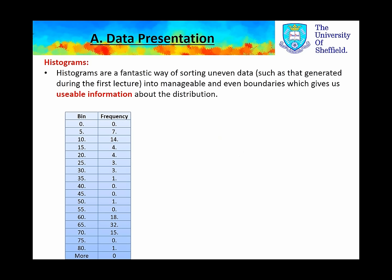In Lecture 3 we learnt that histograms are a fantastic way of sorting uneven data sets, such as that generated during the first lecture. These enable the distribution into manageable and even boundaries, which give us usable information about the distribution. We do this by grouping the data into smaller ranges, called bins.